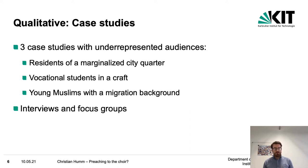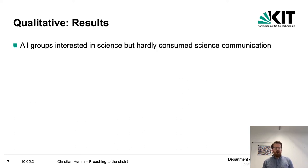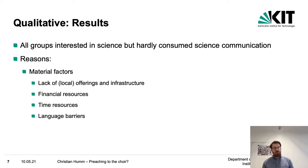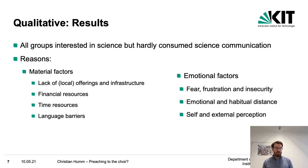We did interviews and focus groups with them to identify the relevance of exclusion factors. All three groups were interested in science, but hardly consumed science communication. As reasons for that, they mentioned, on the one hand, material factors like lack of local offerings and infrastructure, missing financial and time resources, as well as language barriers. On the other hand, emotional factors were relevant too: fear, frustration, and insecurity, often originating from experiences in school, emotional and habitual distance towards science, as well as self and external perception of not being a science person.